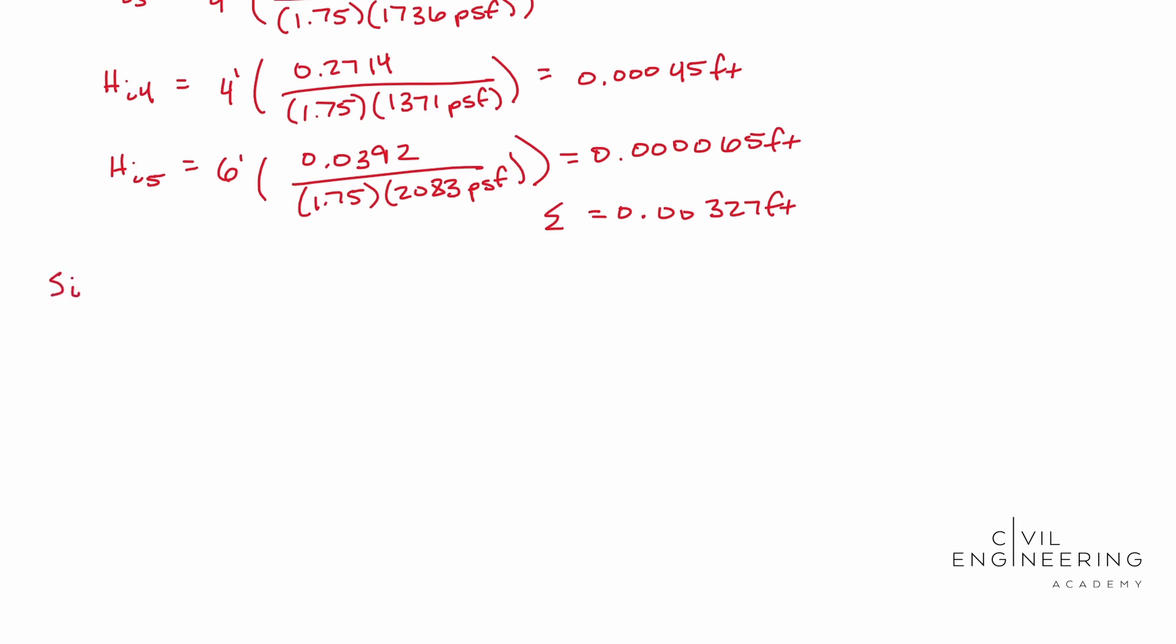S_I is equal to 0.5. Remember that's the minimum that the manual allows us to use for this formula, times 1.4. Remember that's our C2 that we solved for times our pressure, which is 250 pounds per square foot. Remember we solved that based off of the force that it was given us and our width of our foundation. And then we multiply that by the sum of what we just found. So 0.00327 feet. All right.